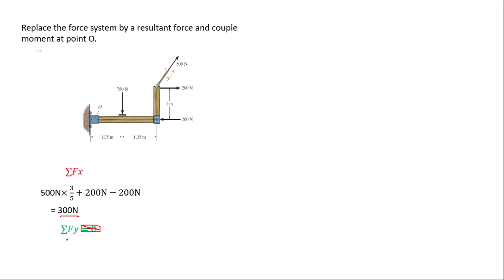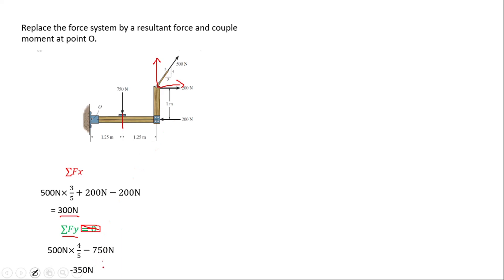Now finding the sum of forces in the y direction: the 500 newton force can be resolved into two components. The y component is 500 newtons times 4/5, which is positive, and we subtract 750 newtons since that force moves in the negative y direction. We get negative 350 newtons.